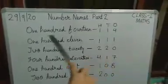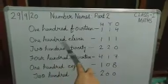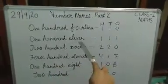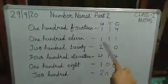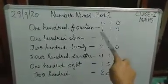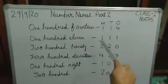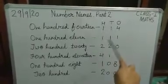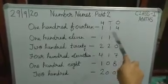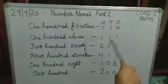Now see the second one: 111. Again in the 100s place value, 1. Then again 1 and 1.